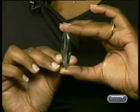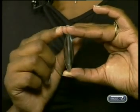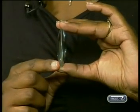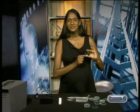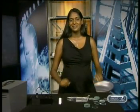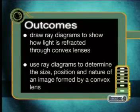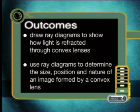Do you see how it bulges in the middle and is thinner at the edges? A lens with this shape is called a convex lens. By the end of today's lesson, you should be able to draw ray diagrams to show how light is refracted through convex lenses, and use ray diagrams to determine the size, position, and nature of an image formed by a convex lens.